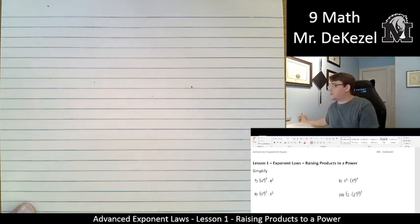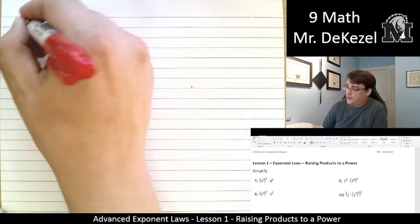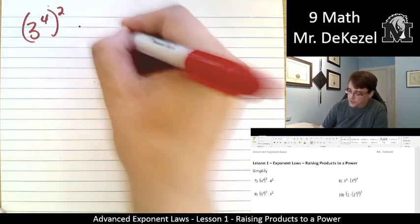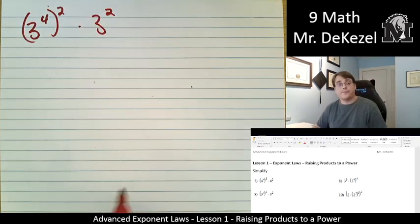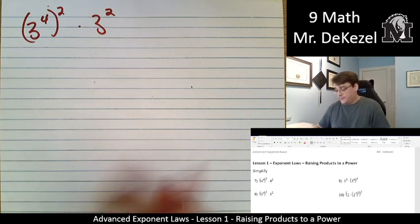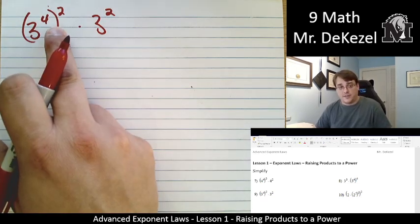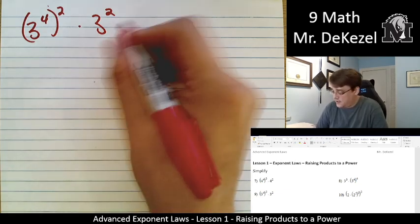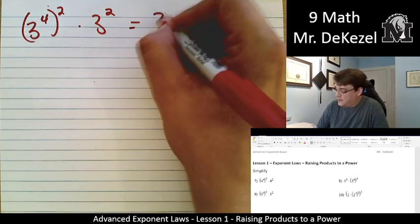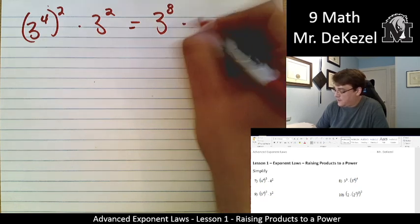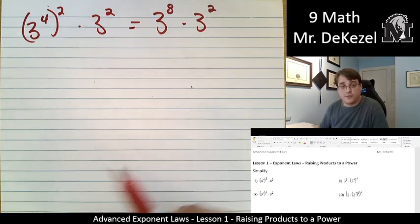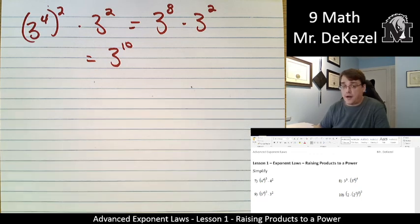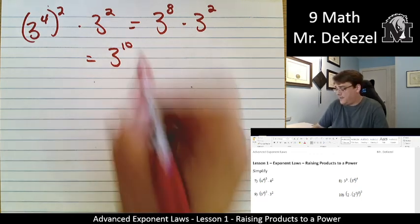Let's go to the next one. We have 3 to the power of 4, all to the power of 2, multiplied by 3 to the power of 2. Same thing — we're going to get rid of the exponent of the exponent on this side so we can add the exponents. 4 times 2 is 8, so 3 to the power of 8 multiplied by 3 to the power of 2. We add those together and that's 3 to the power of 10 for our answer.